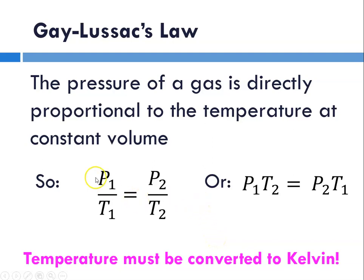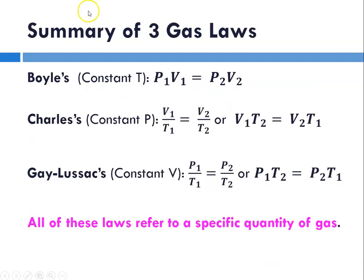So now I wanted to summarize the three gas laws. Boyle's, which is constant temperature: P1 V1 equals P2 V2. That would be the equation we use. Charles's law, constant pressure - remember, think about flying around in a hot air balloon, the pressure doesn't change much. So Charles's law is the constant pressure situation: V1 over T1 equals V2 over T2, or V1 T2 equals V2 T1.